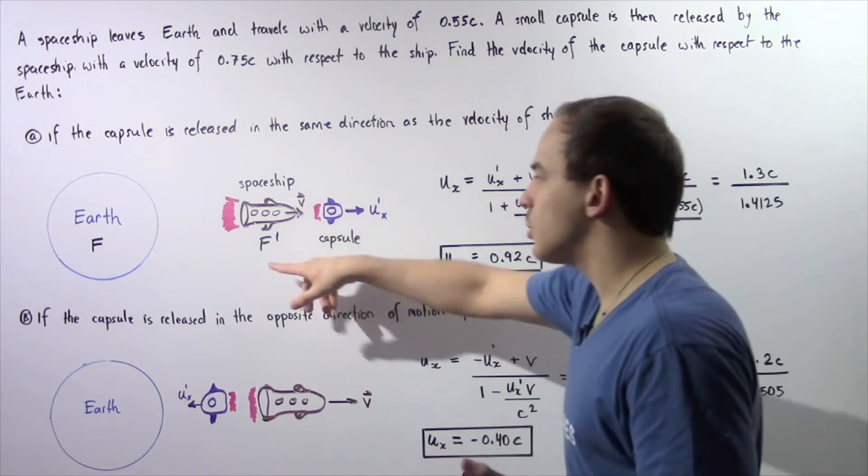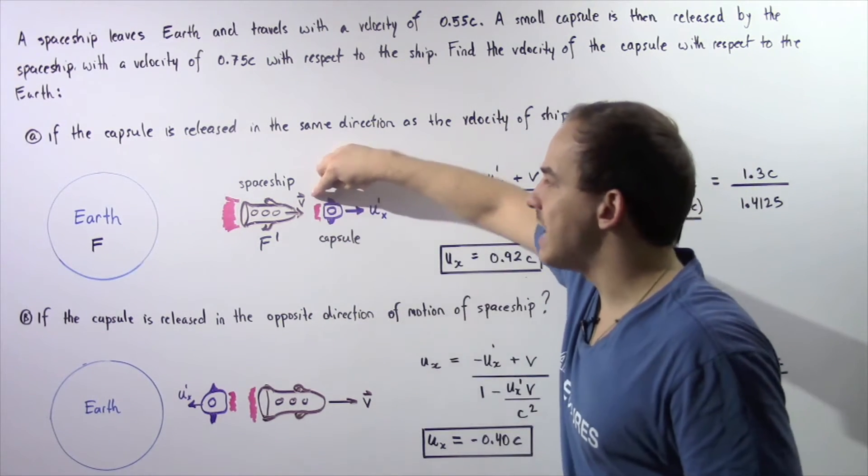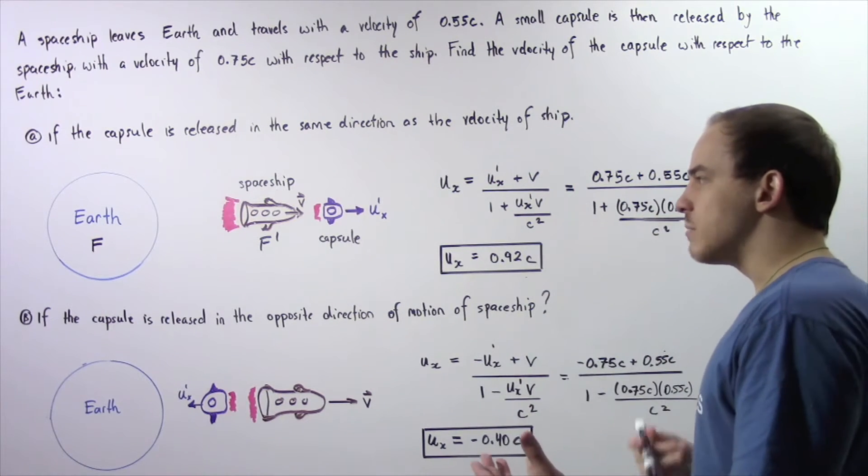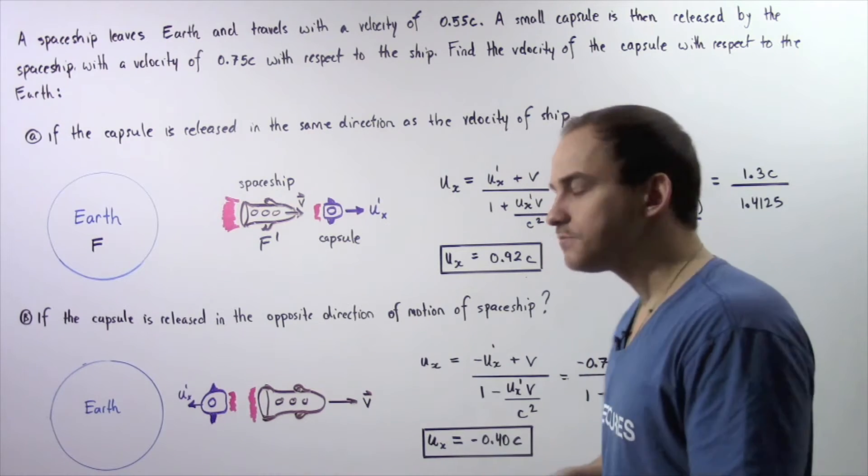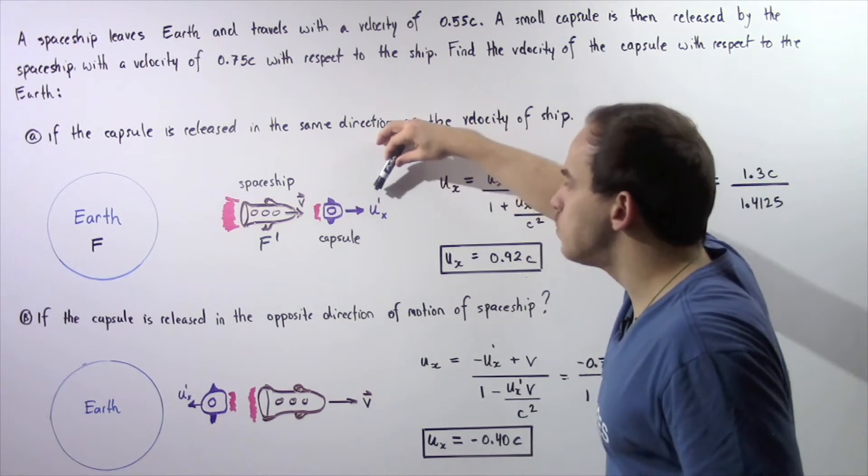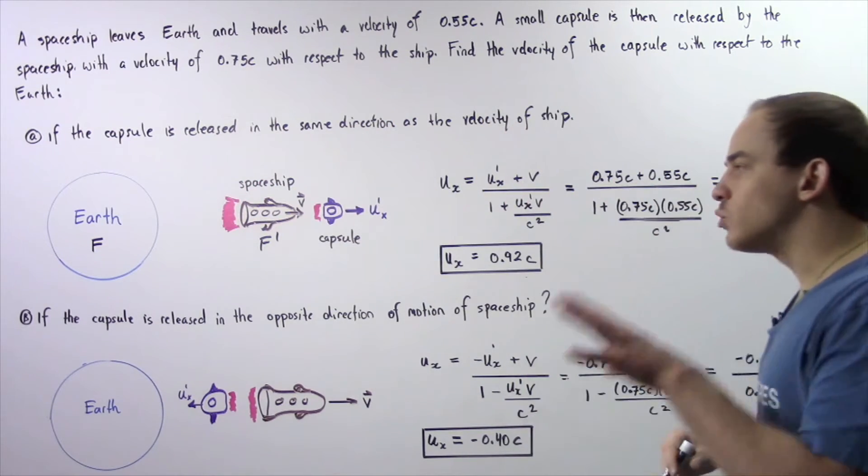The velocity of this inertial reference frame F' is the same as the velocity of the spaceship given by V. The spaceship releases a capsule that travels with the velocity given by U'x with respect to the frame F'.